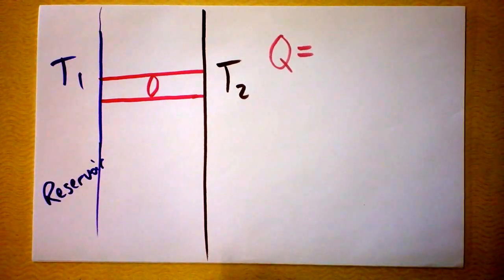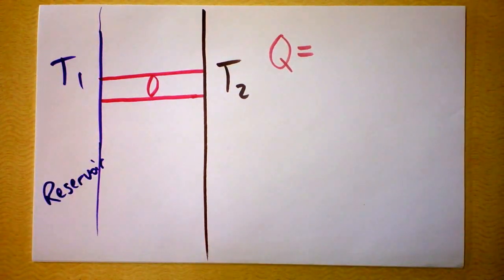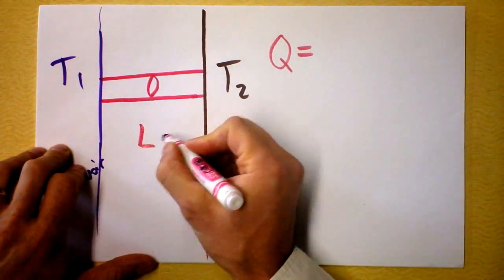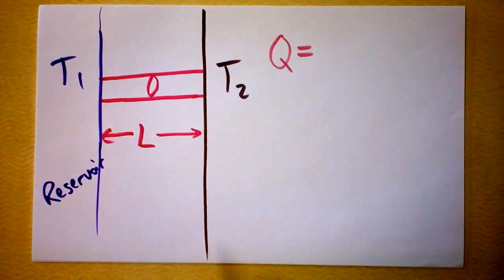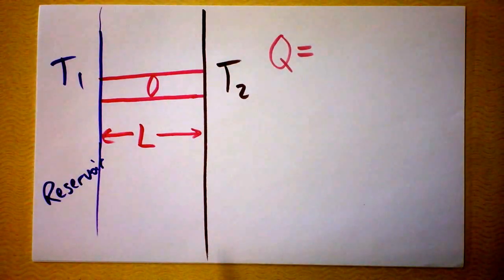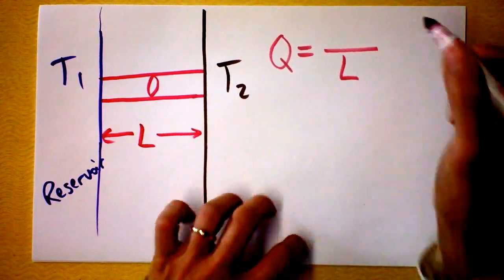Length. Ah. You think if the tube is longer then less heat will flow or more heat will flow? I want to say less heat. So you think that the heat flow may be inversely proportional to length? Is that what you're saying? Yeah. Cool. What else?